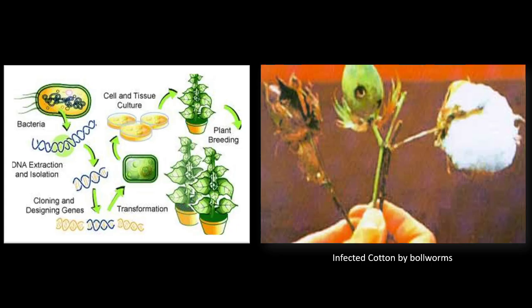In the diagram you will find the bacterial representation — from the bacteria the DNA is extracted, then isolation, cloning, and designing of genes takes place, followed by transformation, cell and tissue culture, and finally pest resistant crops are formed. Another diagram shows an infected plant which is causing damage to the plant.